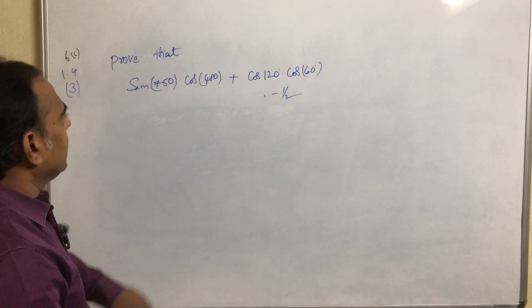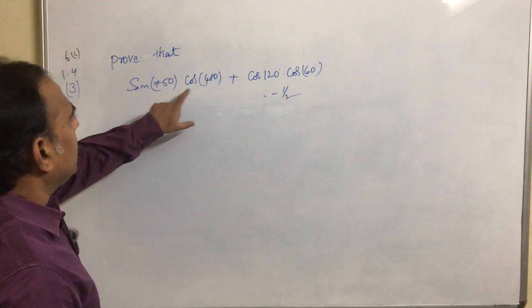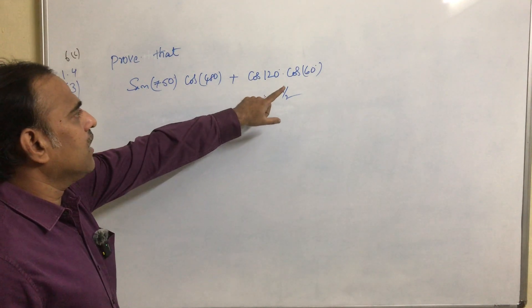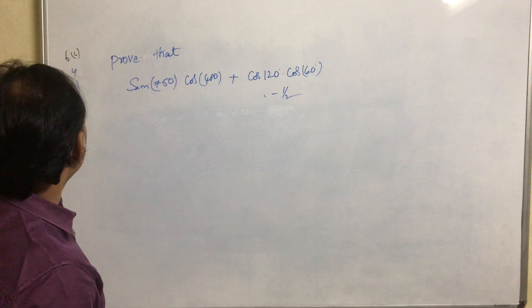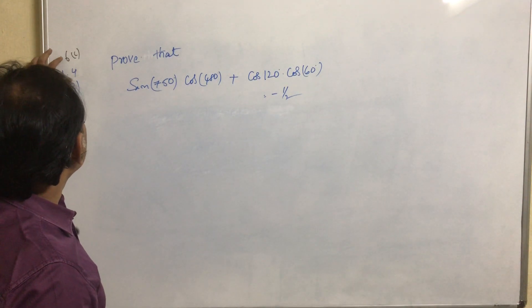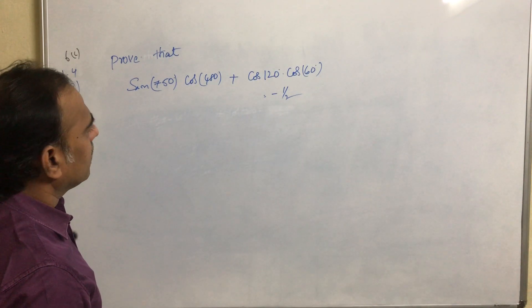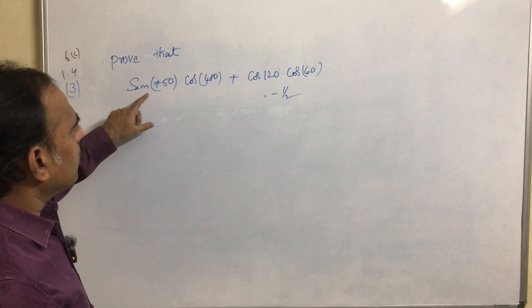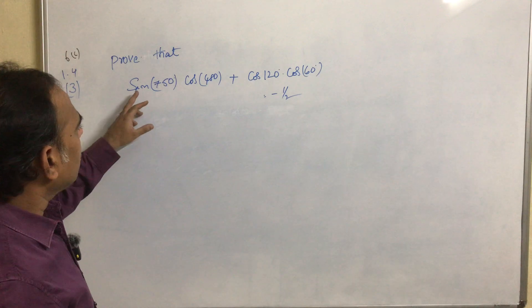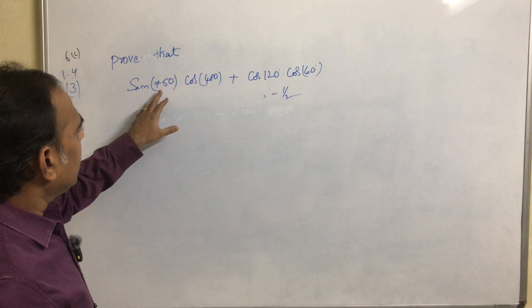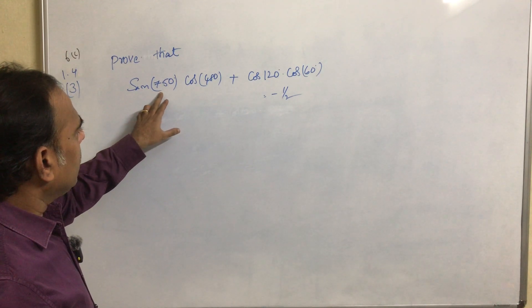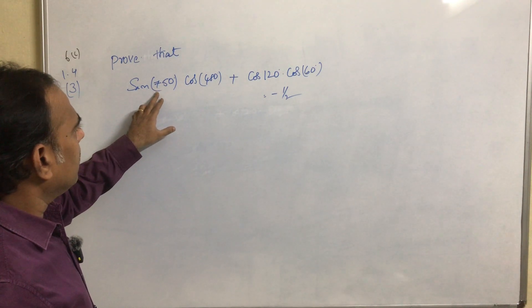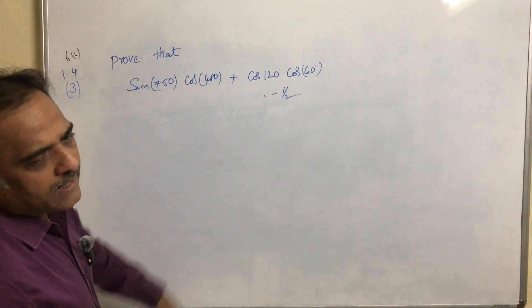We need to prove that sin750 × cos480 + cos120 × cos60 equals minus 1 by 2. We already solved these type of problems. We need to get the value of each term and substitute in the given equation to get the result.